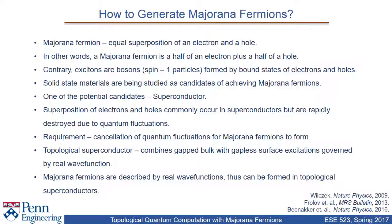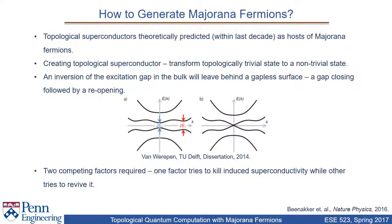This is where topological superconductors come in. Topological superconductors combine a gapped bulk with gapless surface excitations which are governed by real wave functions, thus making it possible to form Majorana fermions in such solid-state systems. Majorana fermions have been predicted within the last decade to be achievable in topological superconductors, which satisfy the criteria giving rise to Majorana fermions. In terms of solid-state physics, topological superconductors can be created by transforming topologically trivial states to non-trivial states, making superconductivity a surface phenomenon instead of a bulk property.